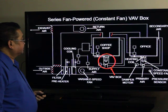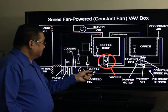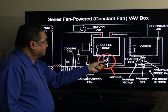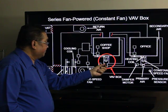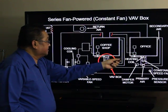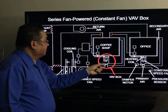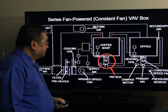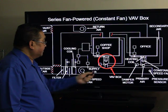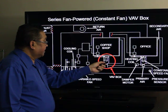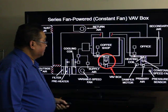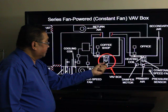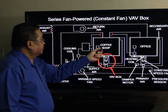In the series fan powered VAV box, the cold supply air is controlled by a damper in the VAV box, with a motor running at constant speed. As you close the supply air damper, more secondary air is drawn in and recirculated, maintaining a constant airflow going to the zone. Because the fan is of constant speed, the cooling requirements will be the one used to size the fan. During summertime when it's very hot, the damper will be fully open and you will need the proper CFM to supply in order to cool down the people in the coffee shop.